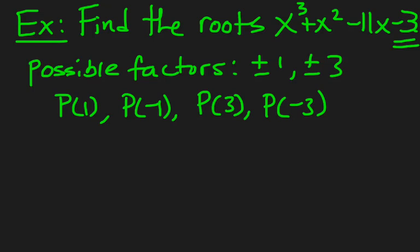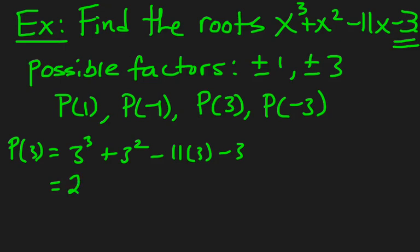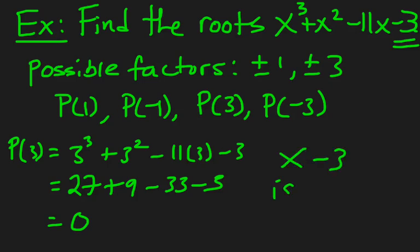So I know that P of 3 equals 0. So I can just check and show you how I can do that. So P of 3. So I go 3 cubed plus 3 squared minus 11 times 3 minus 3. So this ends up being 27 plus 9 minus 33 minus 3. So that ends up being 0. So that tells me that x minus 3 is a factor of P of x.